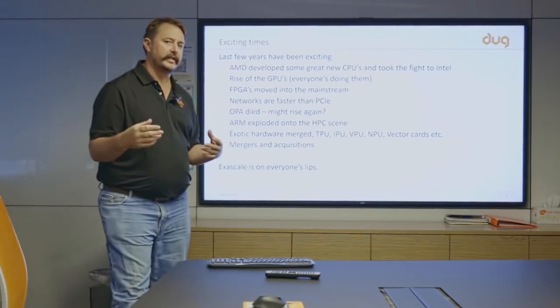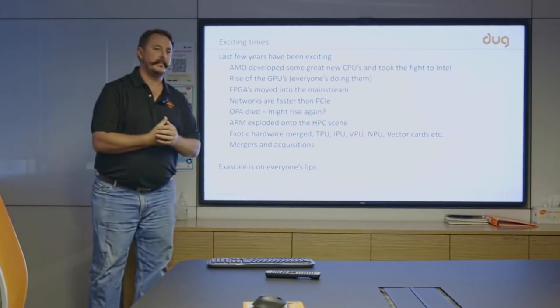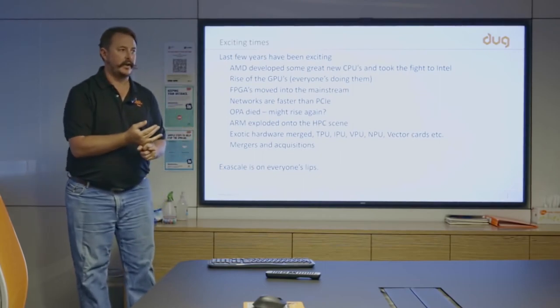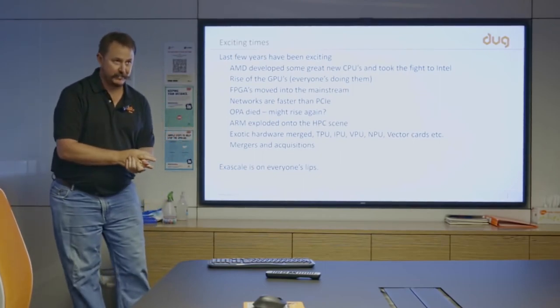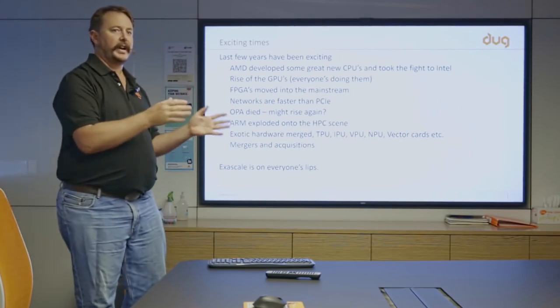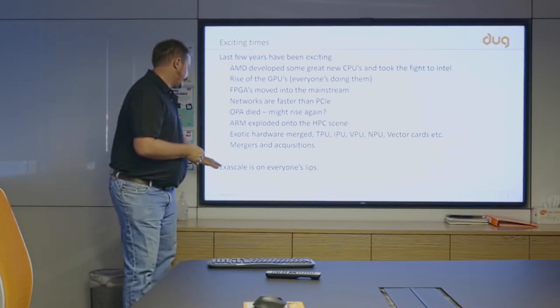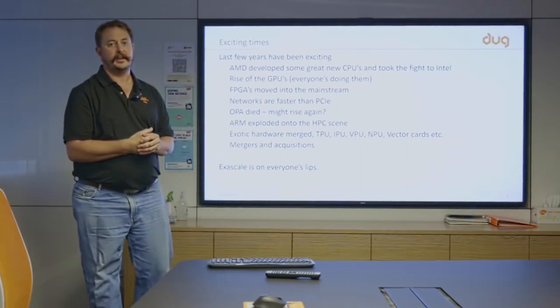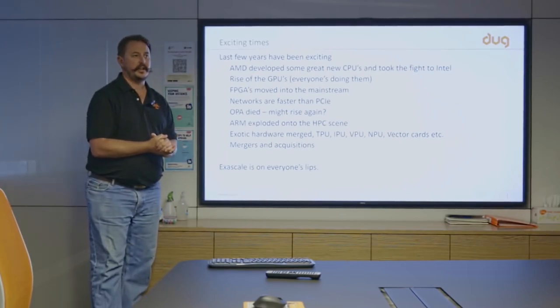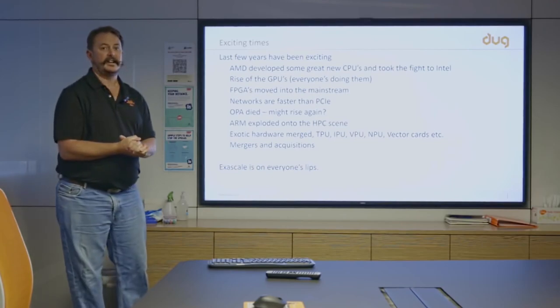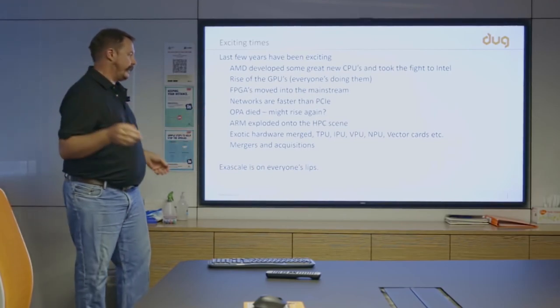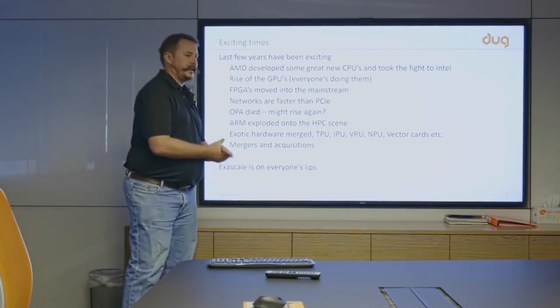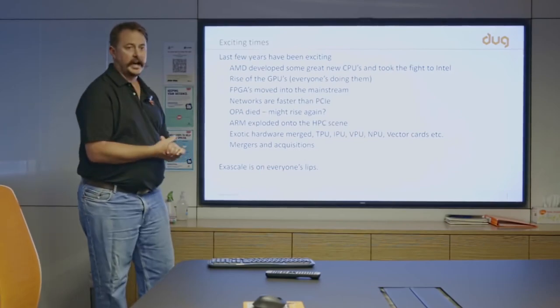This thing called Exascale - they're wanting to build a computer which is a thousand times faster than computers five years ago. We went through the teraflop machine, then the petaflop machine, and now the exaflop. Every time we're getting a factor of a thousand faster. This milestone is expected this year, maybe late this year or early next year. Two years from now, it won't be amazing - everyone will have one.